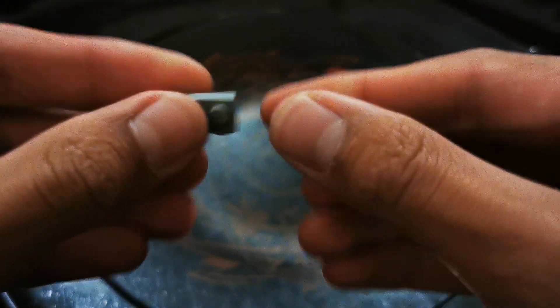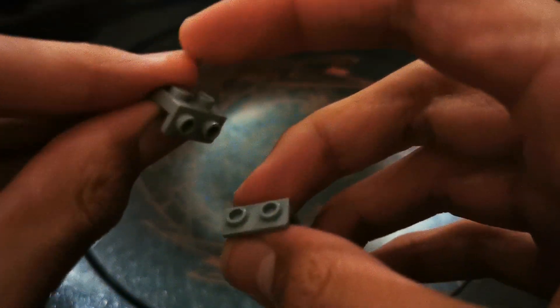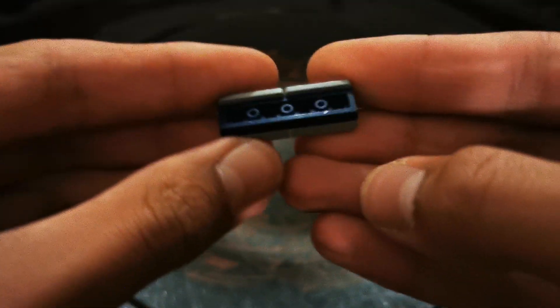Next grab 2 1x2 brackets with 2 studs on each side, and then grab a 1x4 tile in dark blue.